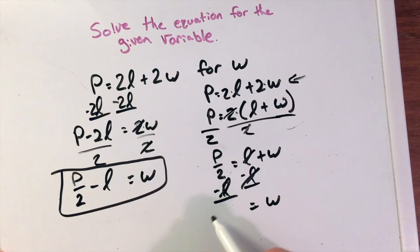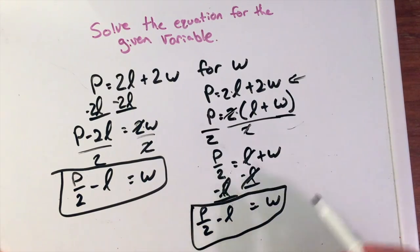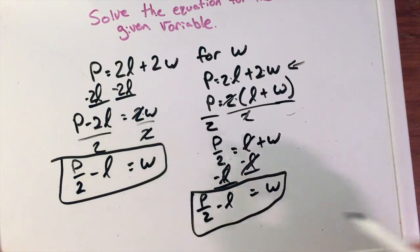Yeah, that's my L. And P over 2 minus L, we leave it like this because, again, they are not like terms. And notice that we have the same equation as we did here.